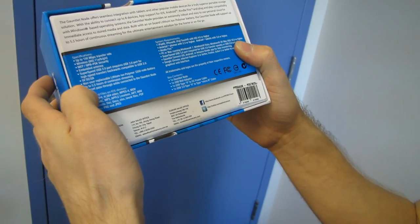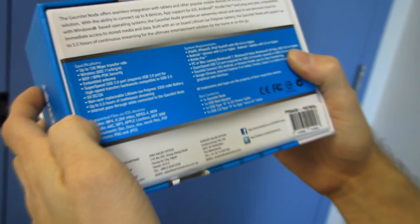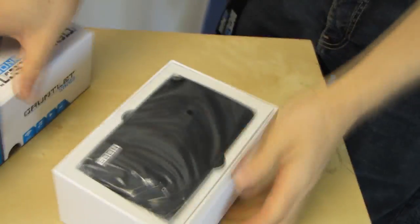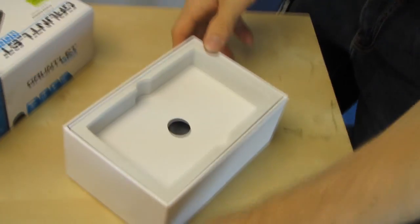So what is this thing? This is basically like a Seagate Go Flex Satellite, except that you don't actually have to buy a Seagate Go Flex Satellite. It's also like Kingston's Wi-Drive.